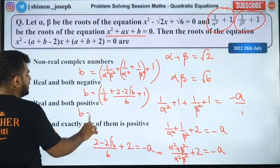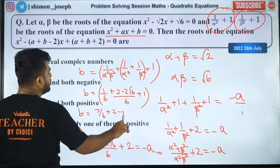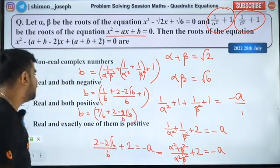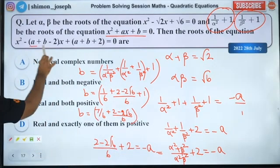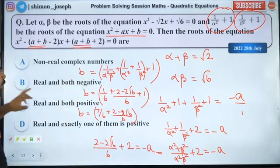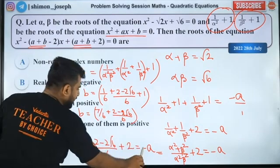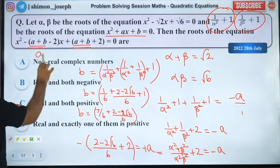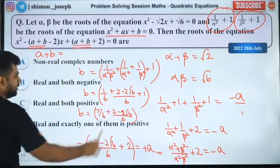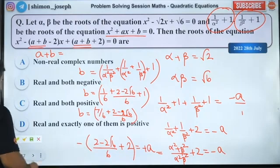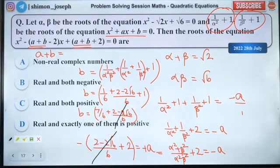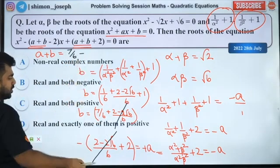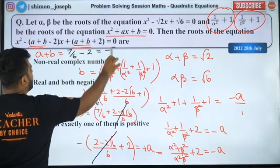So B will be 7 by 6 plus (2 minus 2√6) by 6. So this is your B. This is your minus A. So now I have A plus B, A plus B. My KLV is over. So what is A plus B, we need to find out. So first of all, A will be negative, that is A. So what is A plus B? A plus B is this plus this. So if you see carefully, this will cancel. So it will be basically 7 by 6 minus 2, which will be minus 5 by 6, minus 5 by 6, that is over.